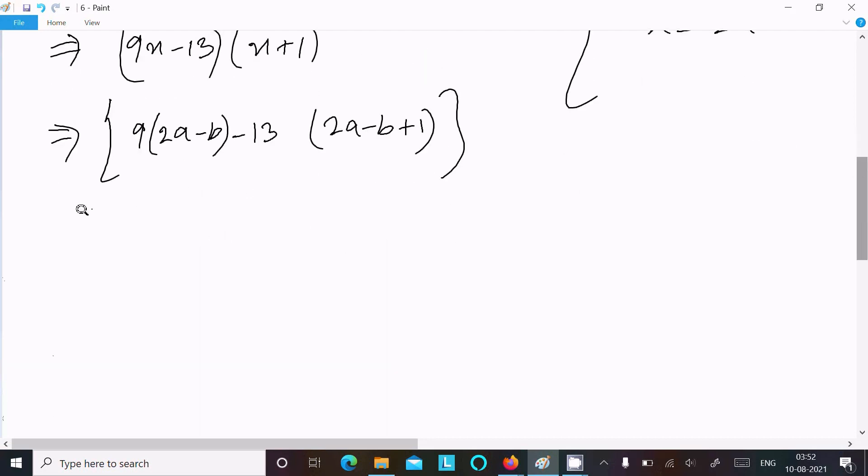Now the next is multiply 9 with these two. So 9 into 2 is 18a, 9 into b is -9b, after that -13. And next is (2a - b + 1). So this is factorization of this equation.